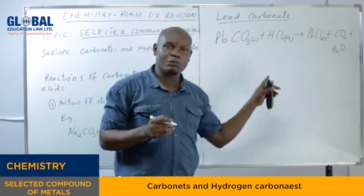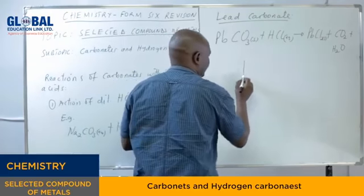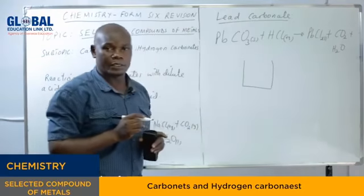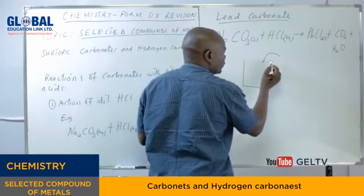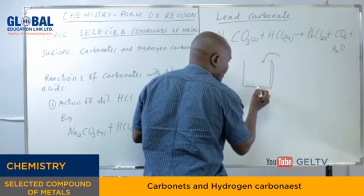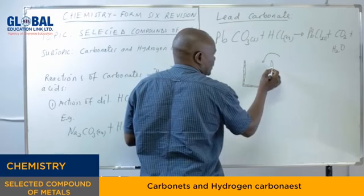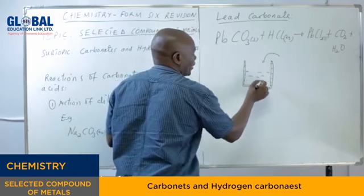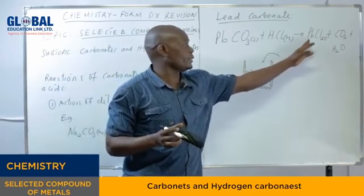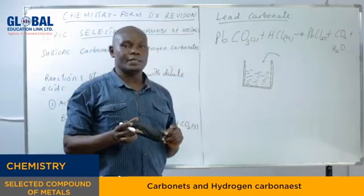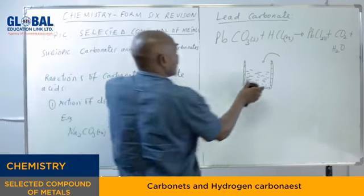That is why a vessel made of lead carbonate can be used to transfer acids. If you pour HCl into such a vessel, just a very small amount of HCl reacts and forms a coating layer of lead chloride, which prevents further reaction, allowing the acid to be carried from one point to another safely.